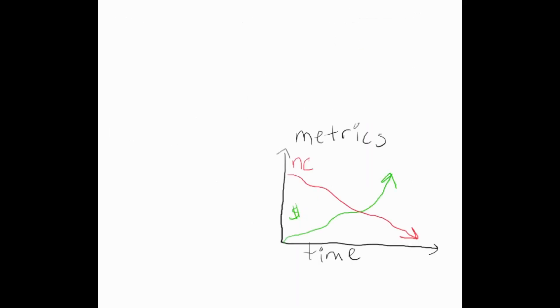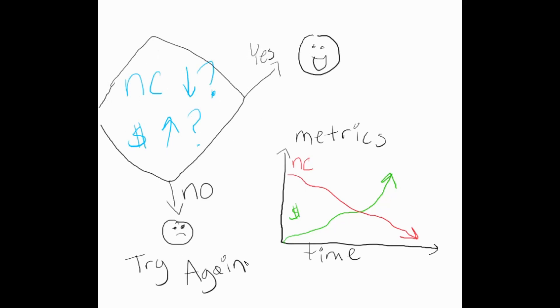Effectiveness Verification. In this phase, data is tracked to ensure the solutions worked. The metrics which had been decided upon during planning are tracked during this phase to see whether or not the plan worked. If it did, everyone is very excited and moves on to other problems. If it did not, a new CAPA is opened and the process begins all over again.